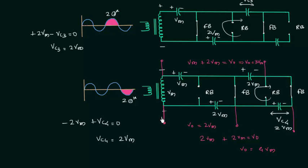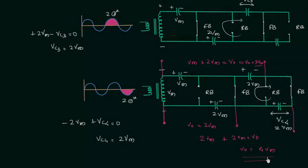When the first and second capacitors are charged, it works as a voltage doubler. When the first, second, and third capacitors are charged, it works as a voltage tripler. When all four capacitors are charged, it works as a voltage quadrupler. If you have any doubt you may ask in the comment section. I will end this lecture here.